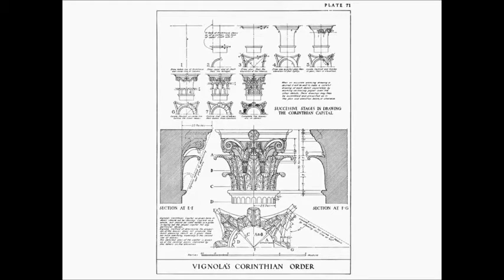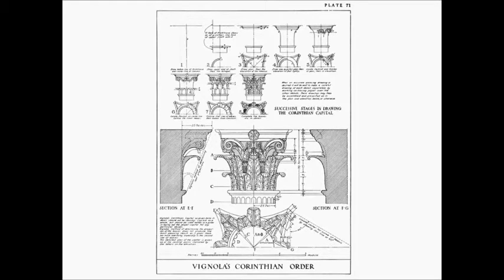One of these volutes runs out to support the projecting corner of the abacus; the other, which is smaller, supports the floron. Sixteen leaves comprise the third row and these curl over under sixteen volumes, making eight masses of ornament — one on each corner of the column and one in the middle of each side. These give in plan an eight-pointed star, each point consisting of a large leaf, two small leaves, two volutes, and above them either the floron or the horn of the abacus. Between them is seen the bell of the cap with its lip.